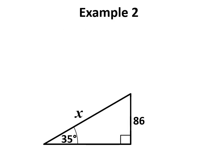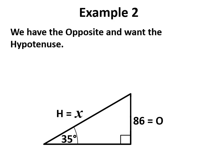We have a triangle with one side length of 86, and we are asked to find another side length. This time the angle's 35 degrees. We are asked to find the value of x. First step is always label, and we have the opposite and the hypotenuse.